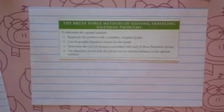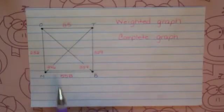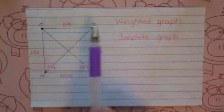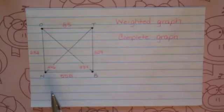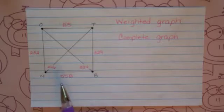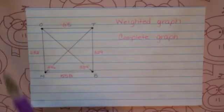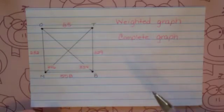If we have more vertices, we'd have to sit here and list them all and find their weights. I brought back the graph from before — Orlando, Tampa, Miami, Bonifay. I want to list all of the circuits that this salesman can take that begins and ends in Orlando.